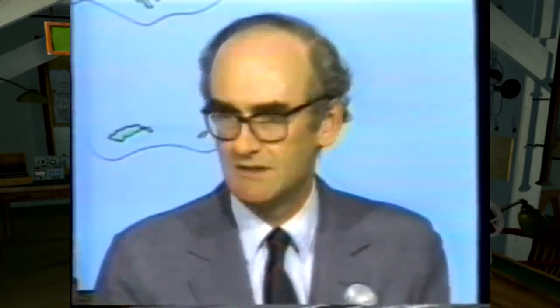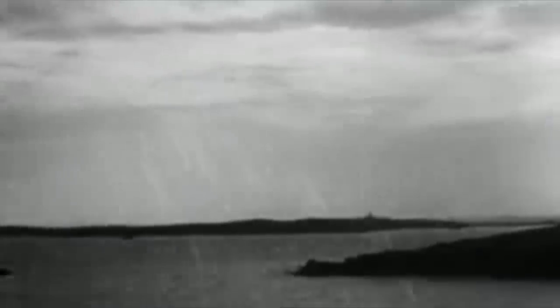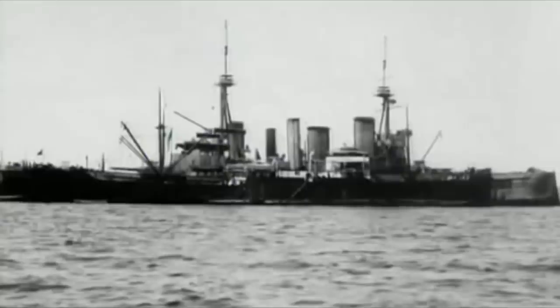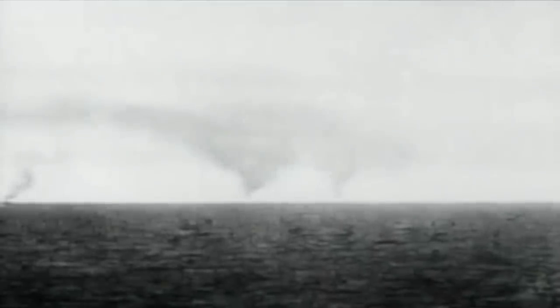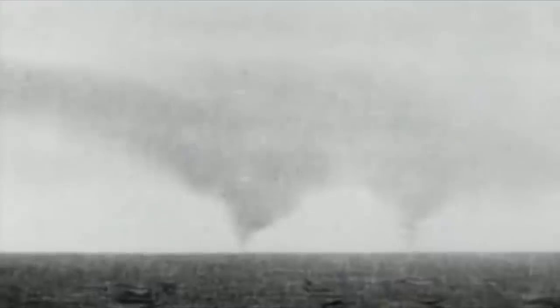Little did he know, though, that Sturdee was headed directly there, and he was going to coal at the Falklands, and then go out and look for him. The British arrived on December 7th, and started refueling, and the Germans arrived on December 8th. And I can only imagine Sturdee, standing on the coast, or on one of his ships, looking out to sea, thinking about how he was going to take down von Spee, when lo and behold, over the horizon, he sees smoke billowing into the air, seeing that the person he was supposed to hunt down had been delivered right to him.